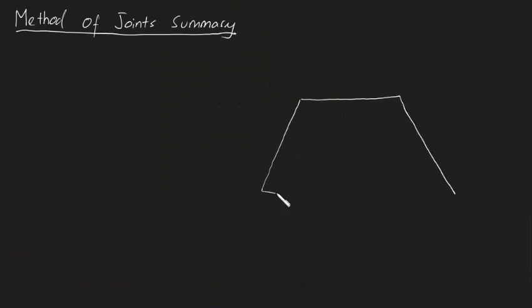A truss is a framework consisting of members pinned at their ends. These pins, also called joints, are often denoted by letters.